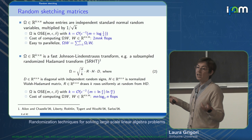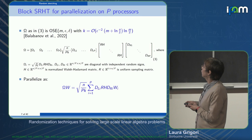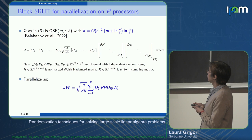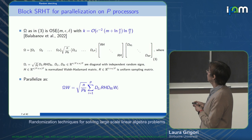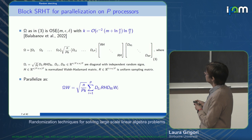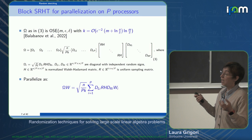Parallelizing the SRHT is like parallelizing the FFT, which has a more complicated communication pattern. So we developed a block subsampled randomized Hadamard transform, writing omega as blocks of columns where each block is a diagonal matrix, followed by a local Hadamard transform, subsampling, and another diagonal. Now each processor performs its local operations and a sum-reduce, making it as efficient in terms of parallelization as the Gaussian matrix.